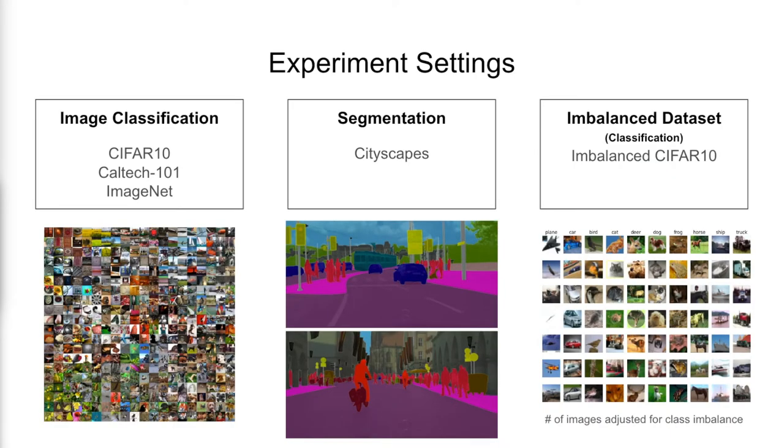We present results on various datasets for image classification and segmentation. Additionally, we experiment on classification for an imbalanced CIFAR10 dataset to demonstrate our method's robustness against class distribution.